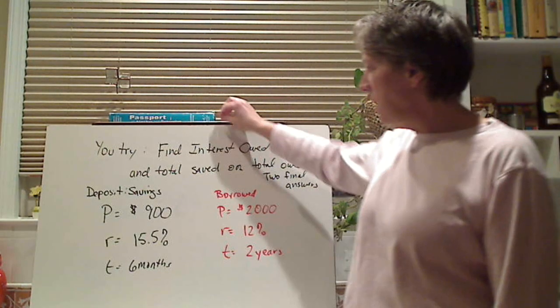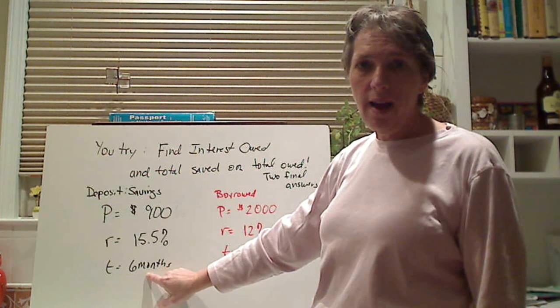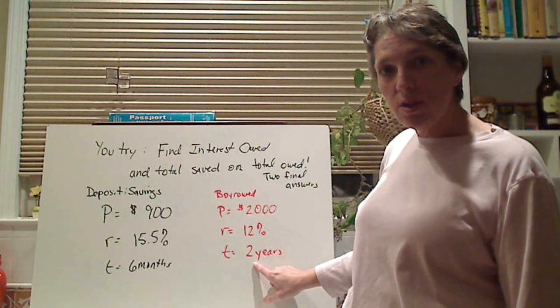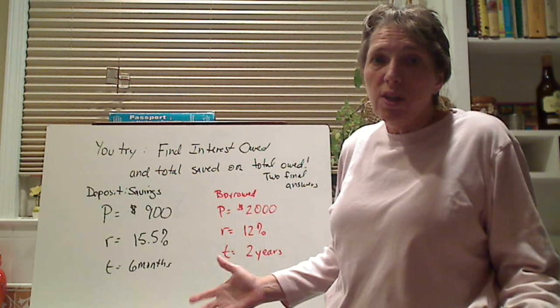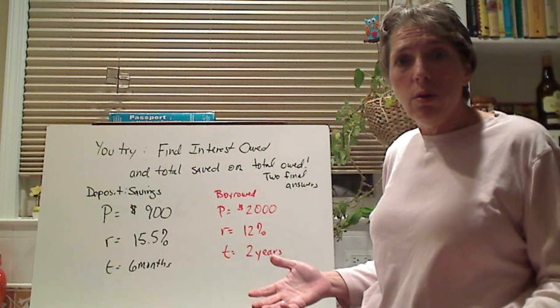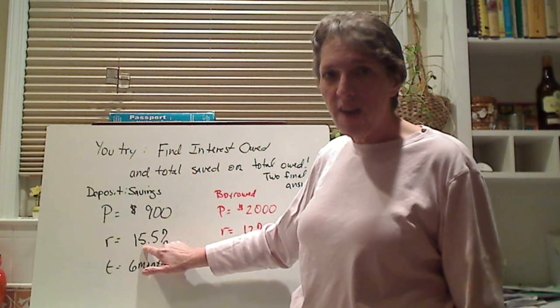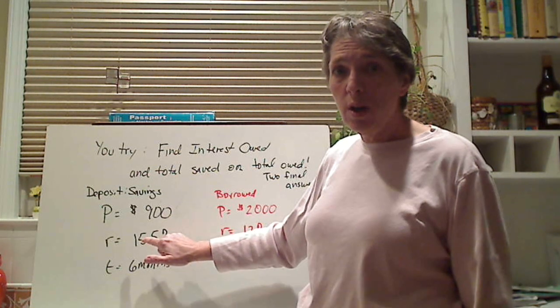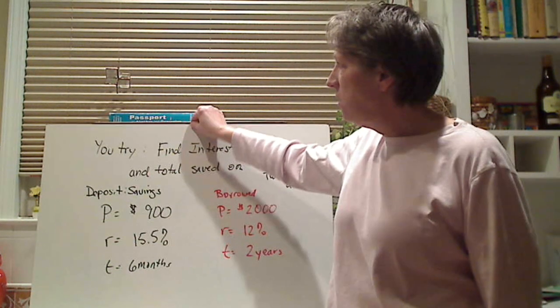Welcome back! Let's see how you did. This should be 6 over 12, 1 half. And did you get stuck with the 2, the 2 years? You just entered a 2. You don't put it over months because it's whole, a whole number. Here, did you put 0.155 instead of 0.15 because it's 15 and a half percent? Let's see how you did.